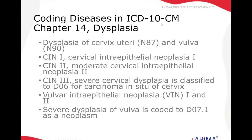And on this slide, we see dysplasia — N87 and N90. CIN1 is cervical intraepithelial neoplasia grade one. When it becomes moderate, it becomes CIN2. And when it becomes severe, it's CIN3.